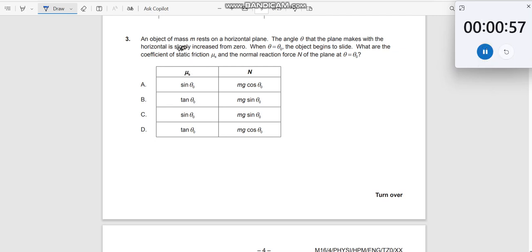Question number 3. An object of mass M rests on a horizontal plane. The angle theta that the plane makes with the horizontal slowly increases from 0. When theta equals theta 0, the object begins to slide.